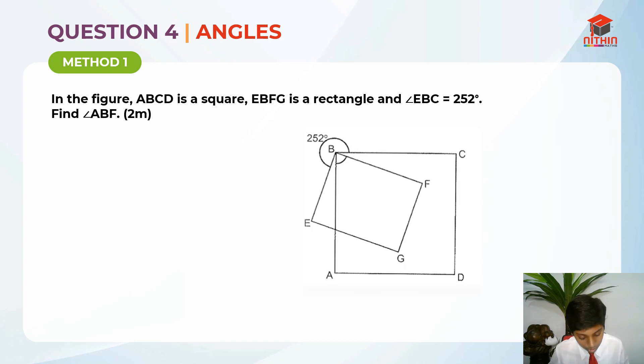Let's underline and highlight the key information. ABCD is a square, this is a key information, and EBFG is a rectangle, this is another key information, and angle EBC is 252 degrees. This is also a key information. Once I read this question, I know that this question is testing us on angles. There are many properties in angles, but I'm just saying it commonly as angles.